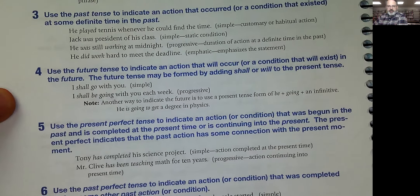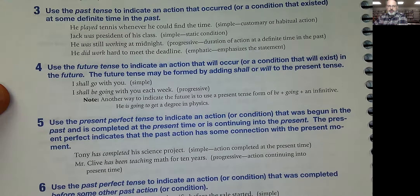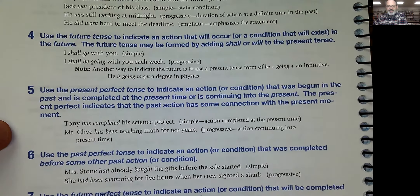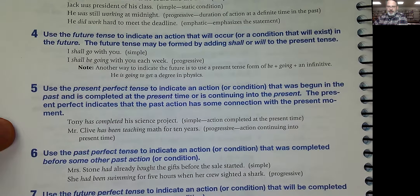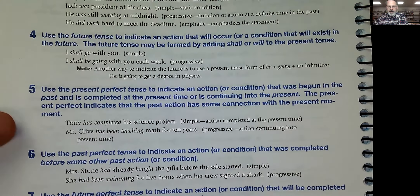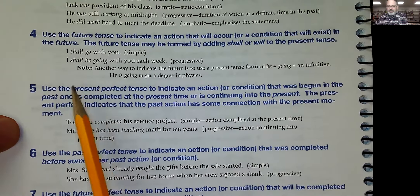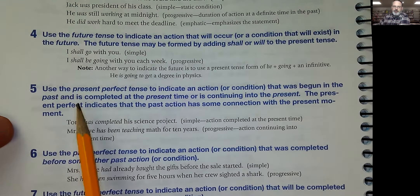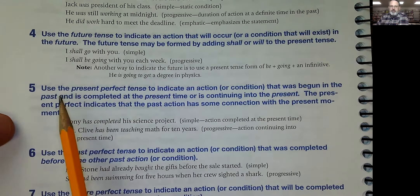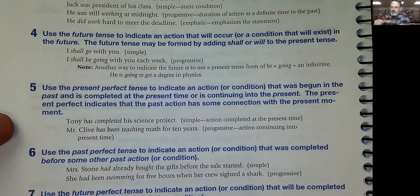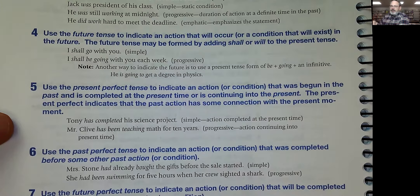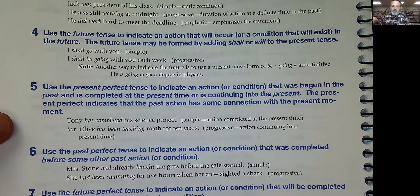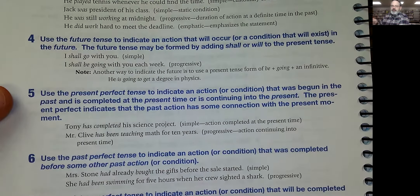Use the future tense to indicate an action that will occur or a condition that will exist in the future. The future tense may be formed by adding shall or will to the present. Use the present perfect tense to indicate an action or condition that was begun in the past and is completed in the present or is continuing into the present. Present perfect indicates the past action has some connection to the present moment — for example, Mr. Clive has been teaching math for ten years: he's still teaching and was teaching ten years ago.